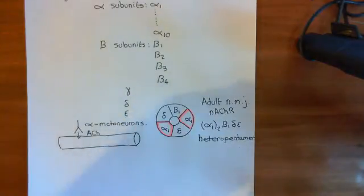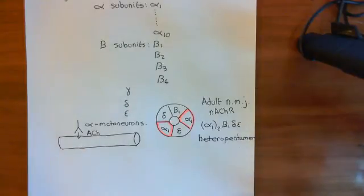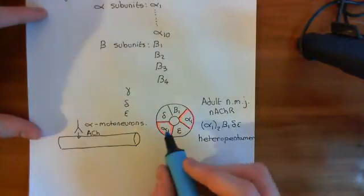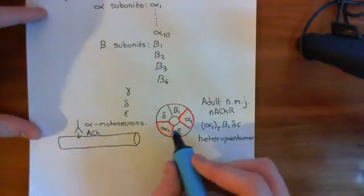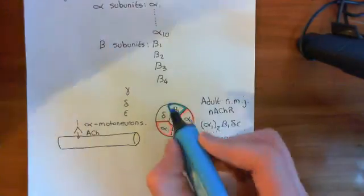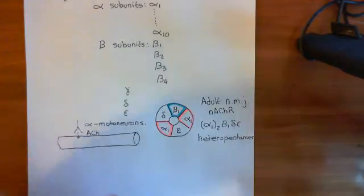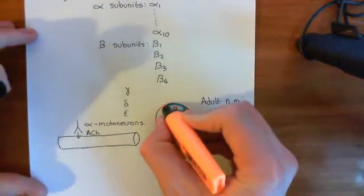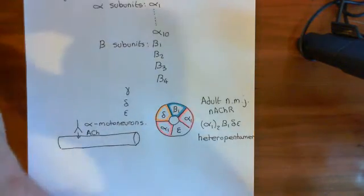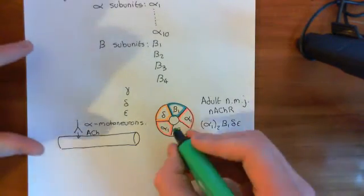The reason I'm stressing that it's the adult nicotinic acetylcholine receptor at the neuromuscular junction is because the fetal one is slightly different, and we'll discuss the fetal one in a moment. The adult neuromuscular junction nicotinic acetylcholine receptor has two alpha-1 subunits in red, the beta-1 subunit in blue, the delta subunit in orange, and finally the epsilon subunit in green.